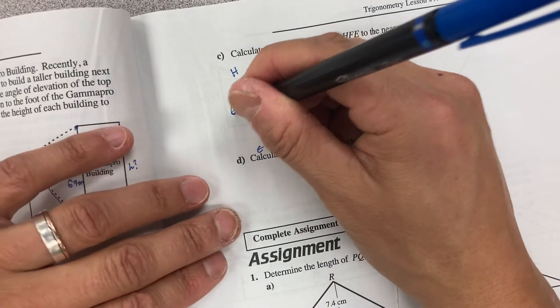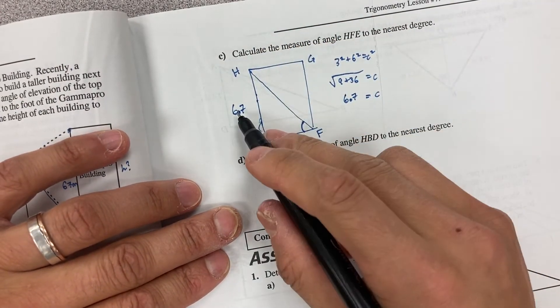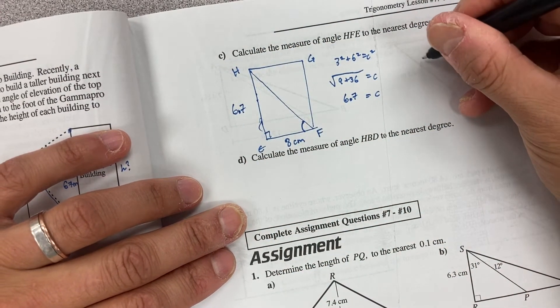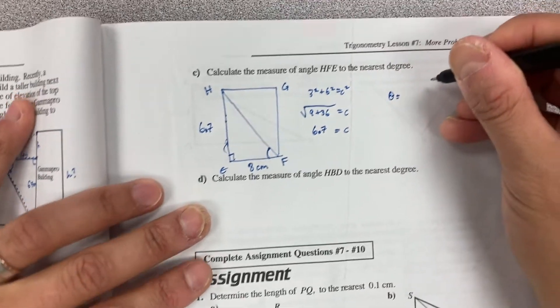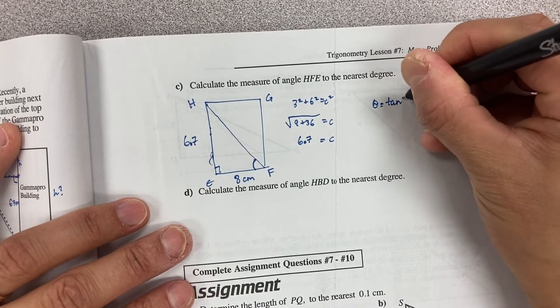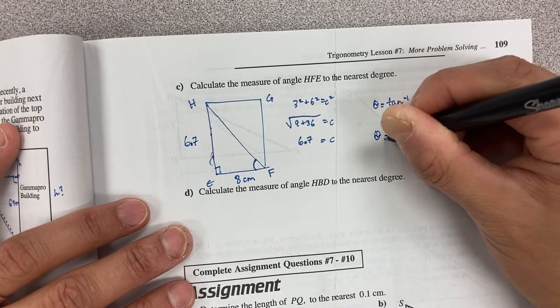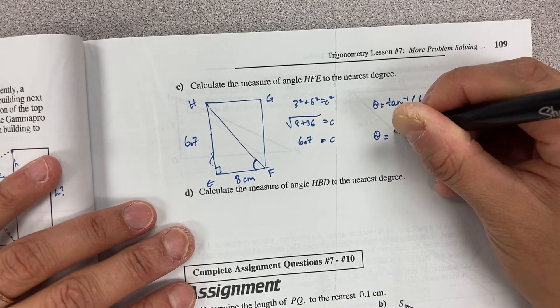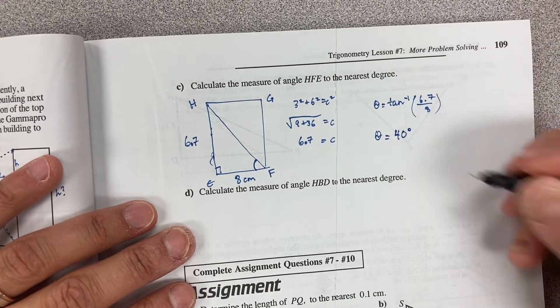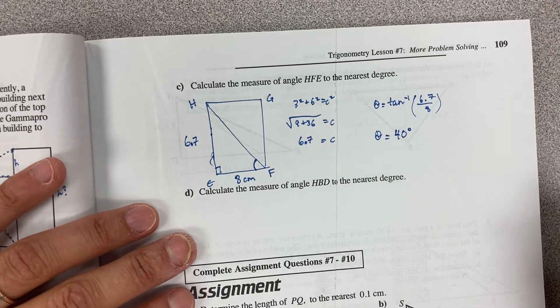Now I have this side length I can then use my tan ratio again which is going to become tan inverse of 6.7 divided by eight and that value of my angle. I'm going to round to 40 degrees because it ends up being 39.9 degrees.